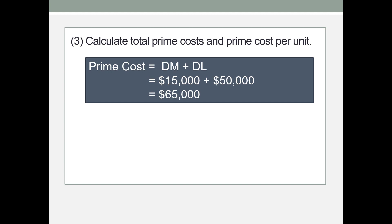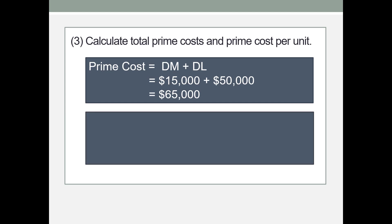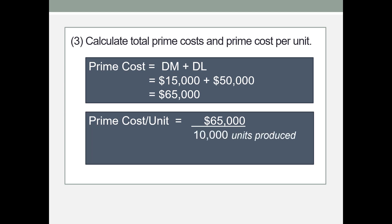We are asked to compute a prime cost per unit. We take the $65,000 of prime cost and divide by 10,000 units produced — not 8,000 units sold, because production cost should be divided by production. We get a cost per unit of $6.50.